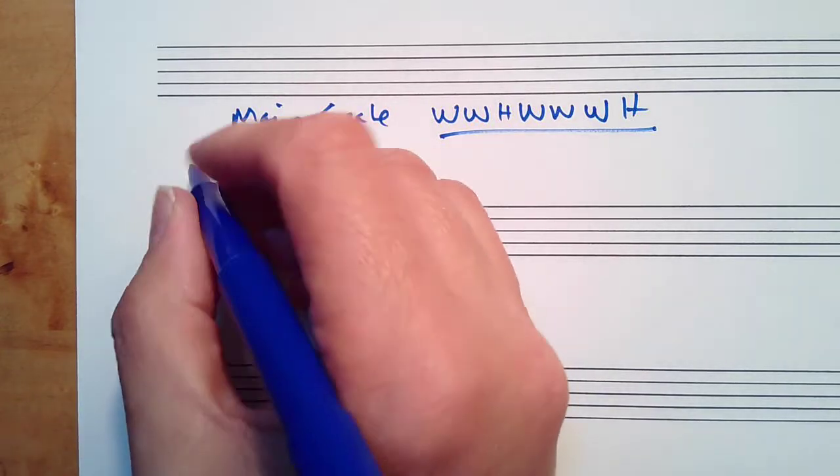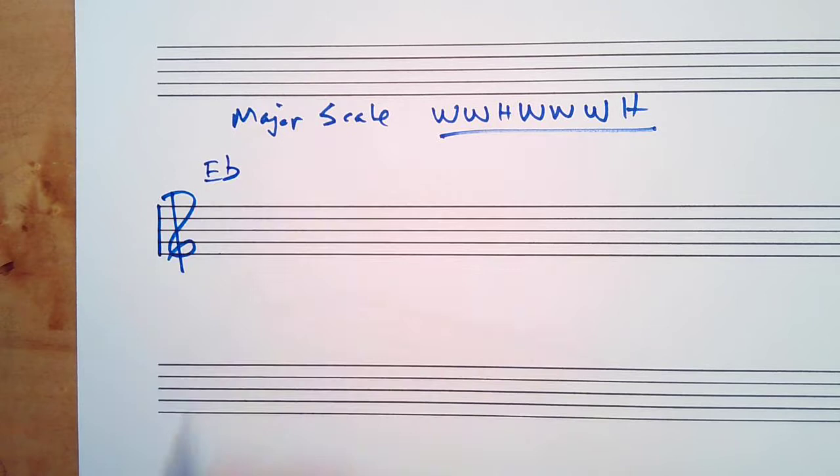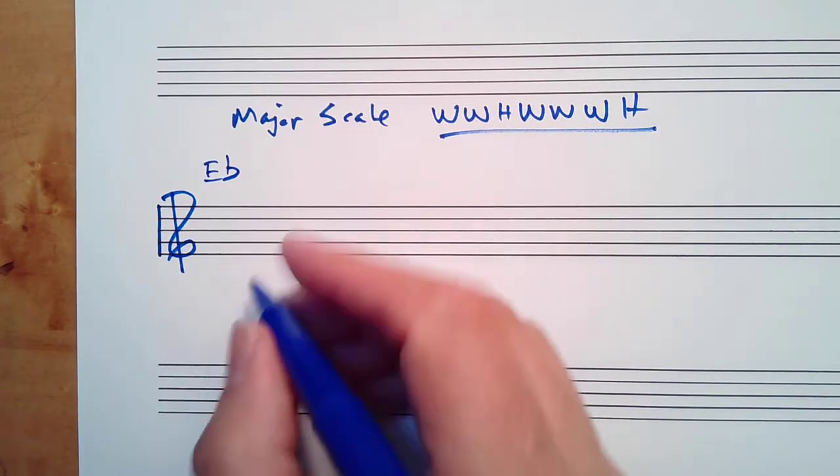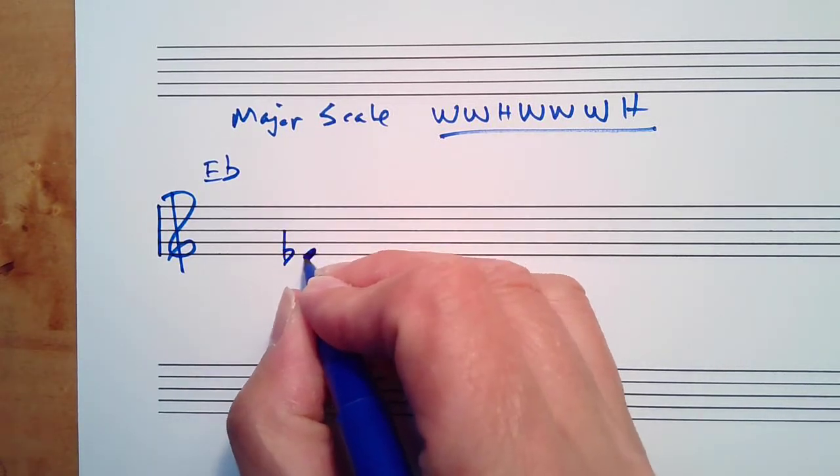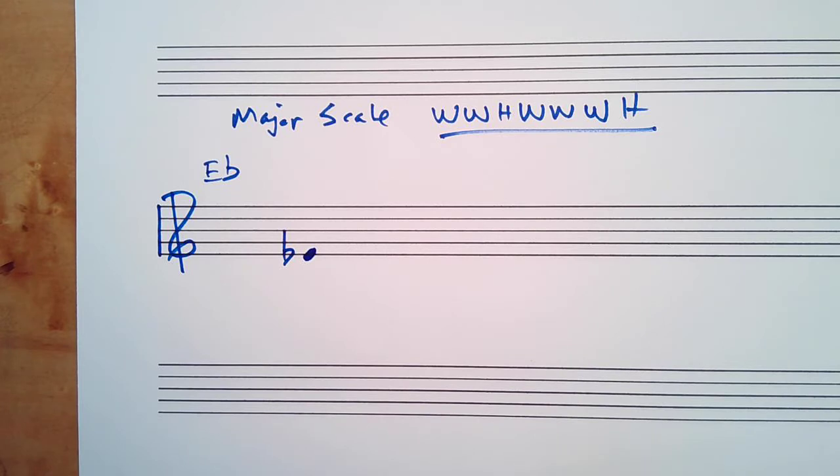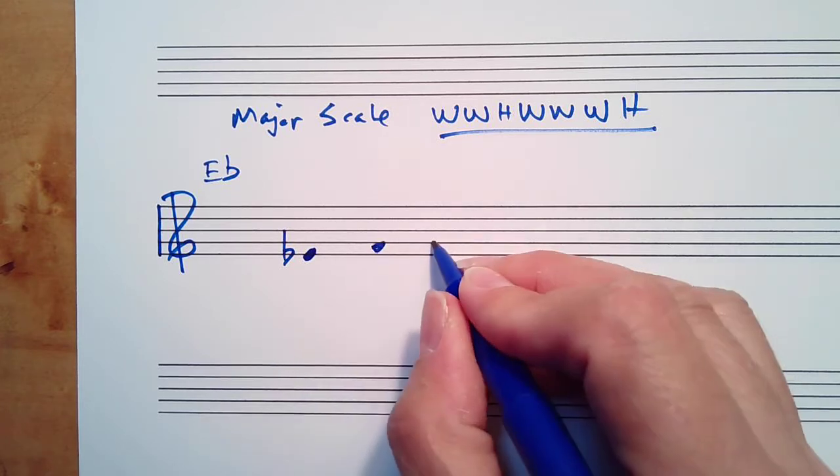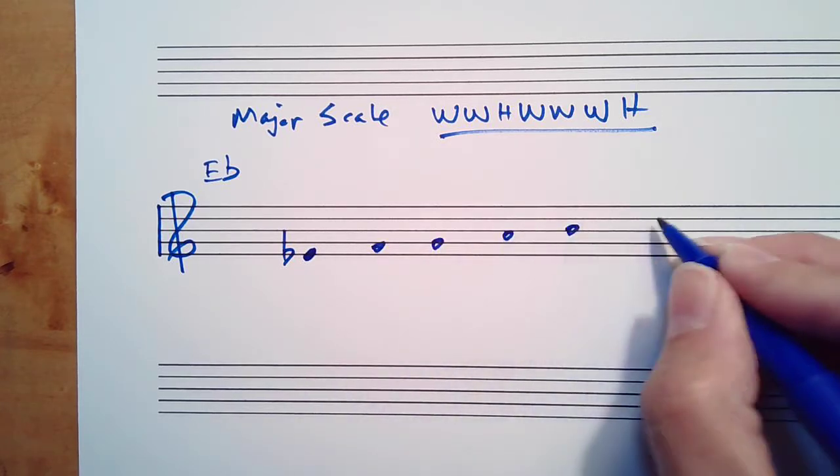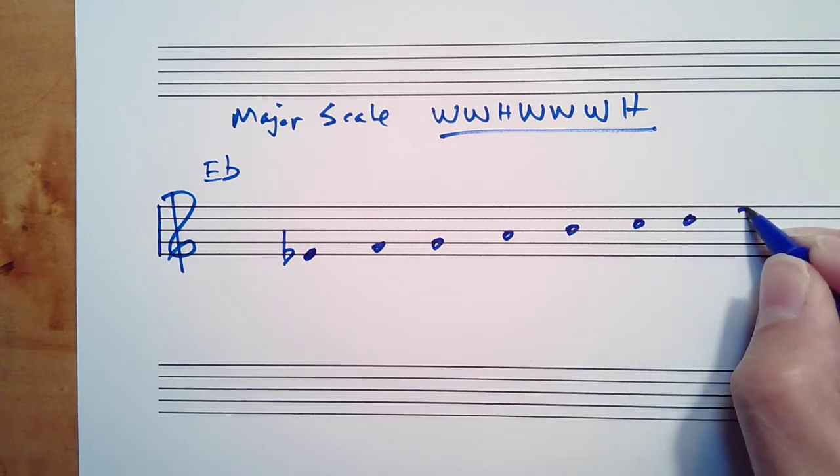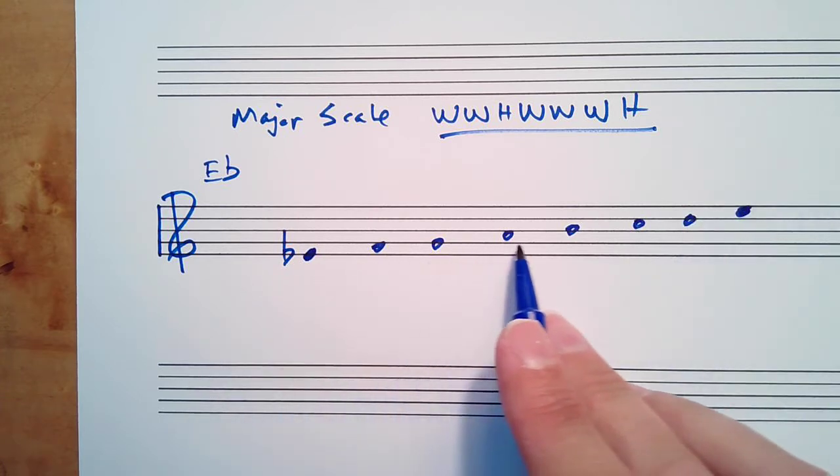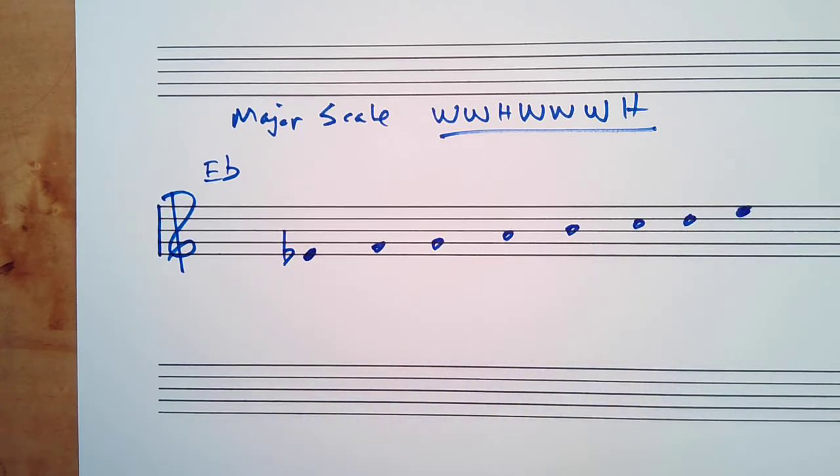If you're asked for a scale, let's say E flat. First step, write the first note of the scale. Step number two, write in the rest of the note heads going up stepwise: E F G A B C D E.